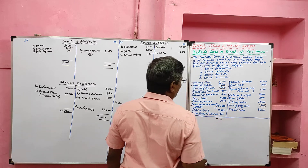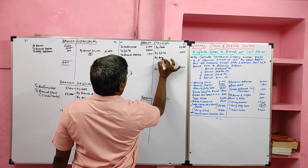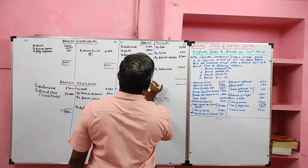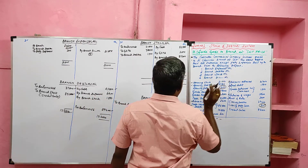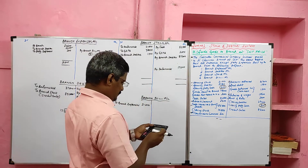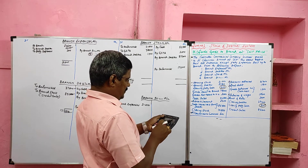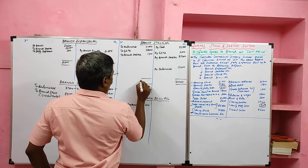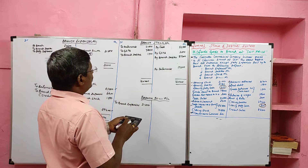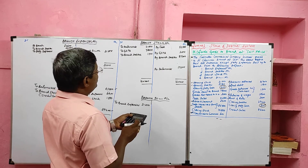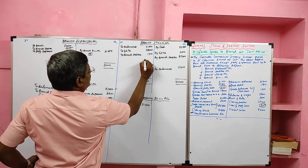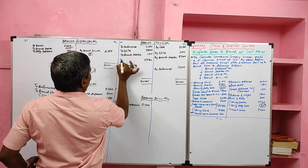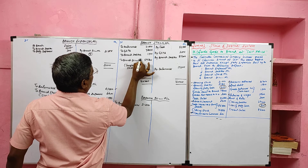Credit sales are credited to the Branch Stock Account as 'By Branch Debtor Account,' value 85,200. Since the head office sends goods to the branch at cost price, the credit side total is heavier. Credit side total: 52,500 plus 3,000 plus 85,200 plus 19,500 equals 1,60,200. Debit side total: 21,000 plus 78,000 plus 1,500 equals 1,00,500. The balancing figure is 59,700, which we consider as surplus of stock, and it should be transferred to the Branch Profit and Loss Account.